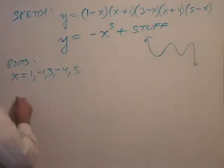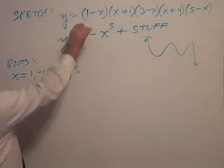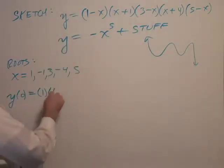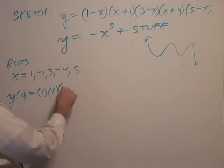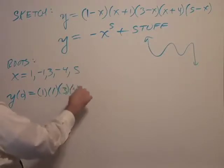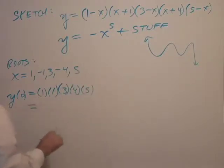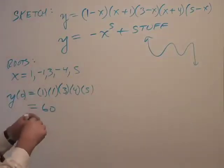And the y-intercept would be... again, you're plugging 0 in for x. So 1 times 1 times 3 times 4 times 5. It's positive. Positive 60. Okay.